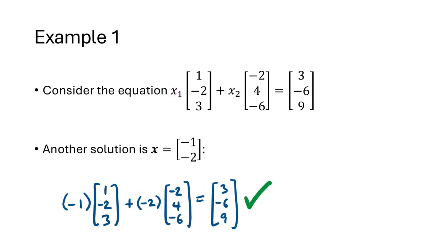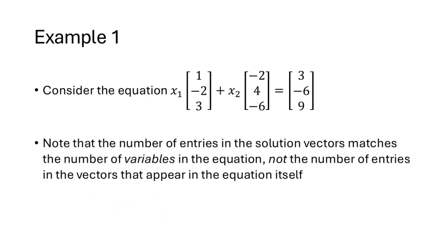Another solution is the vector negative 1, negative 2, and again we can check that by plugging in negative 1 for x1 and negative 2 for x2 and making sure that the left-hand side equals the right-hand side. Notice that the number of entries in the solution vectors in this case is 2, even though the vectors that actually appear in the equation have 3 entries. The solution vector is going to have 1 entry for each variable in your equation.